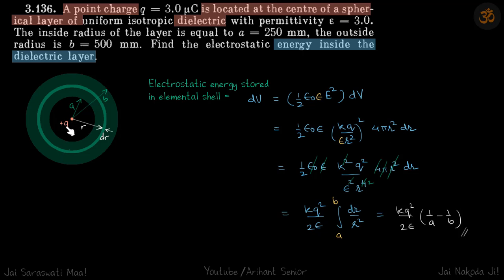We have a charge plus Q at the center of this dielectric. We need to find the energy inside the dielectric layer. We're going to use our formula that half epsilon E squared is the energy density. E is changing with distance, so we have to take an elemental shell and calculate the small energy stored in that shell, then integrate it from A to B to get the total energy stored.